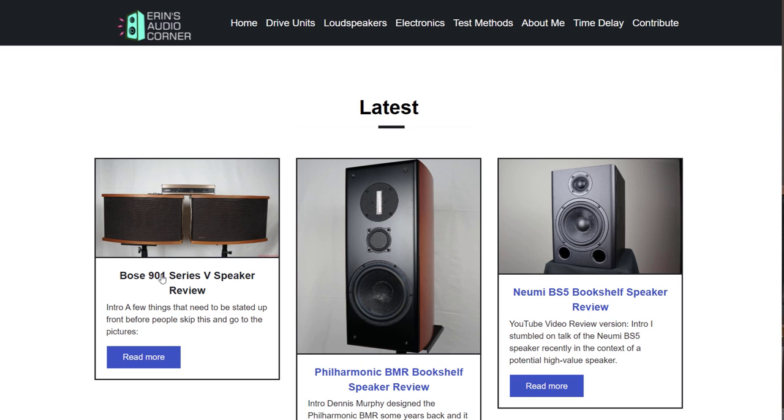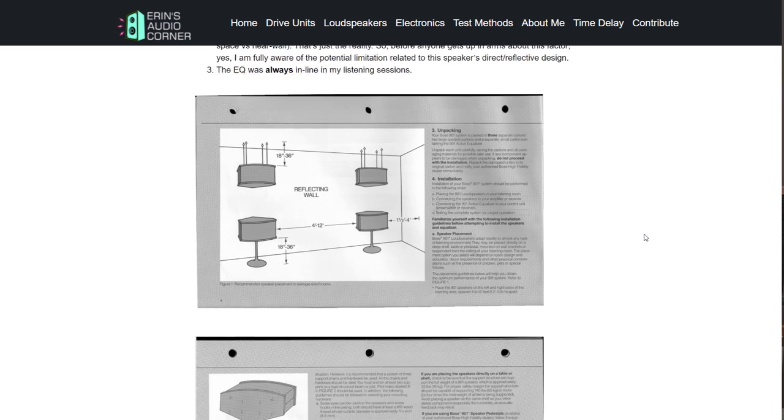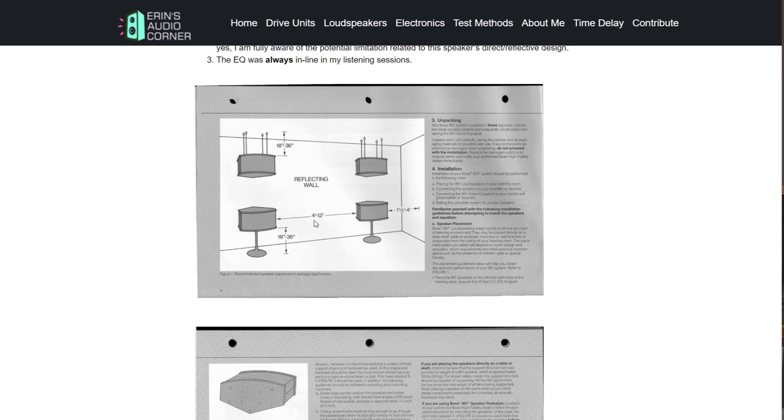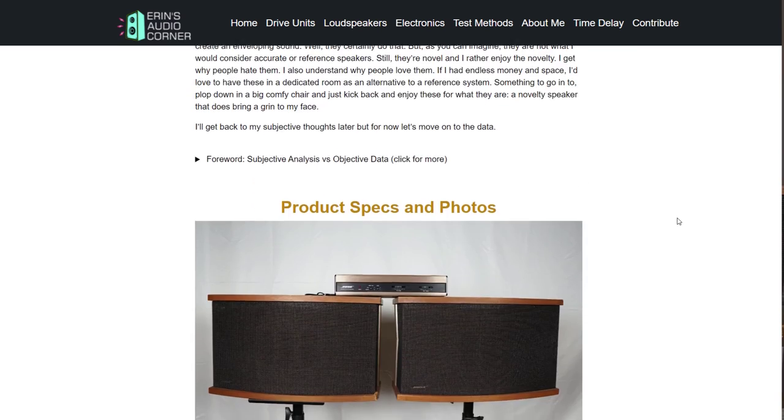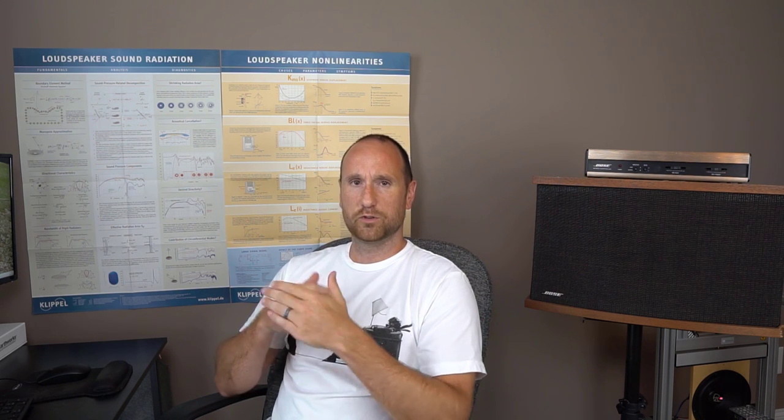Let's get to some of my actual measurements and we'll see how these things perform objectively and then maybe help you make sense of why I heard what I heard and why I feel the way I do about them as far as accuracy goes. So I'm on my website which is aaronsaudiocorner.com. Here's some pictures of the speakers, here's a couple images from the manual that kind of tells you about how far the spacing should be off the wall etc. As far as my objective data goes I measured this speaker raw and then I measured it with the EQ in line.